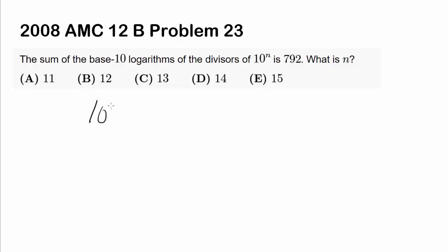So we have 10 to the nth, and we are finding divisors of this. So there is going to be all the way from 1 to 10 to the nth. And you are taking base 10 logarithms, so you're doing log base, let's call the first divisor to be a, second divisor to be b, and it's going to go on.